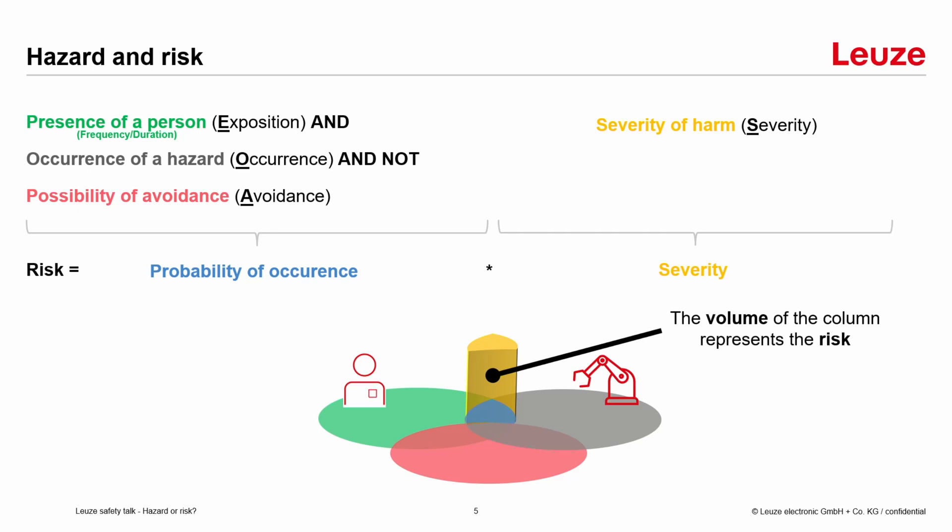The next point is the occurrence of the hazard — is it permanently there or very seldom? And the last one is the possibility of avoidance: can I see what's happening or not? Is it moving very fast or very slow? These three points together form the probability of occurrence, represented as the blue area in our graphic. If the person and the occurrence of the hazard are very close together, this area gets bigger. If the possibility of avoidance increases, the area gets smaller.